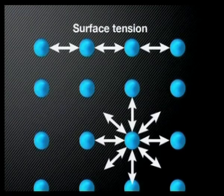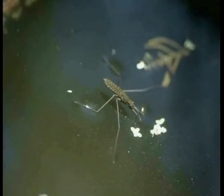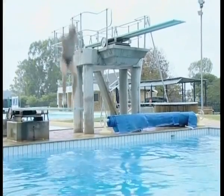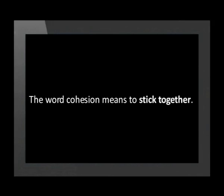Hydrogen bonding creates a phenomenon called surface tension, where the molecules at the surface of the liquid are attracted to each other sideways and downwards, causing them to stick together. So the surface of water behaves like an elastic skin that can support a downward force. This surface tension allows insects to walk on water, or mosquito larvae to live in still water and breathe through the surface. You can also experience the strength of water's surface tension if you jump off a diving board — it sometimes stings!